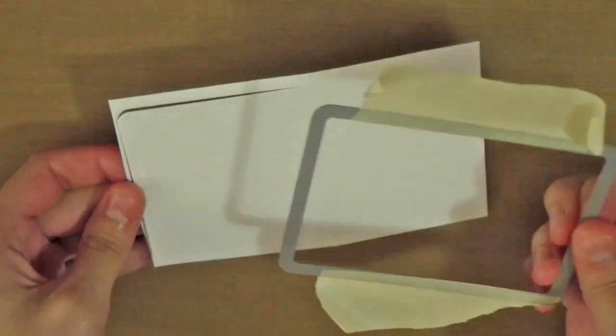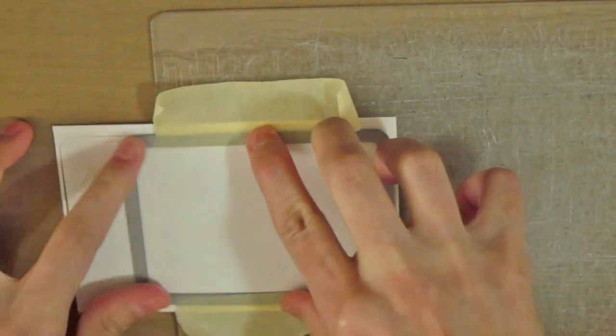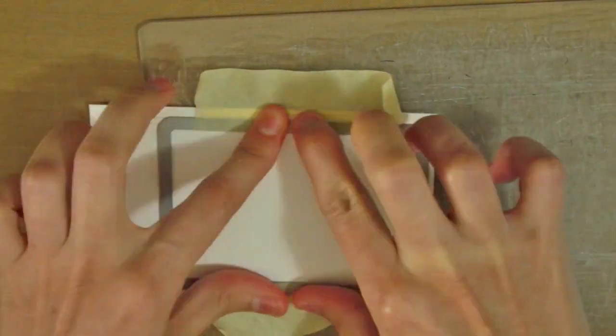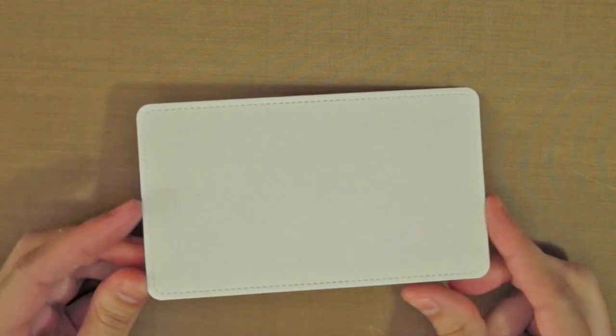Then, I will offset the die to the side that wasn't cut the first time, fitting the stitched marks of the paper with the ones in the die. Again, I will leave one extreme hanging from the plate, this time the one that was die cut already.